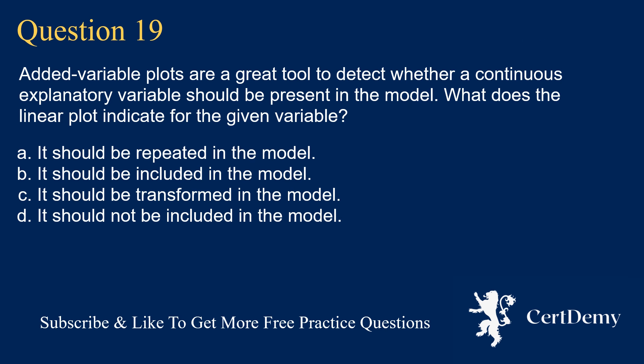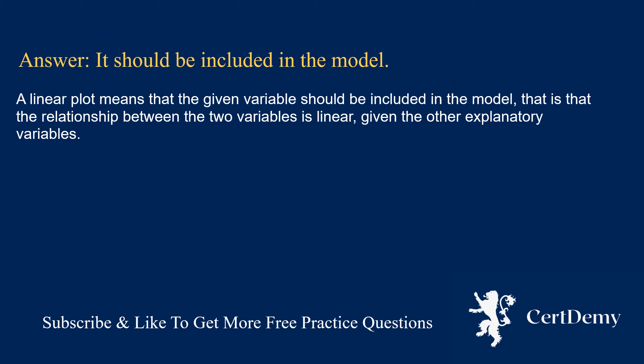Question 19. Added variable plots are a great tool to detect whether a continuous explanatory variable should be present in the model. What does a linear plot indicate for the given variable? Options: it should be repeated; it should be included; it should be transformed; it should not be included. The answer is: it should be included in the model. A linear plot means that the given variable should be included, indicating that the relationship between the two variables is linear given the other explanatory variables.